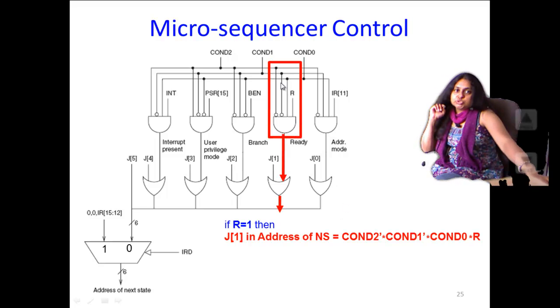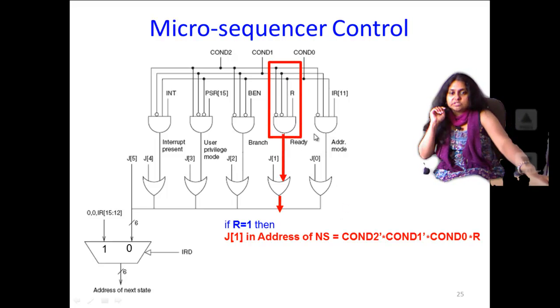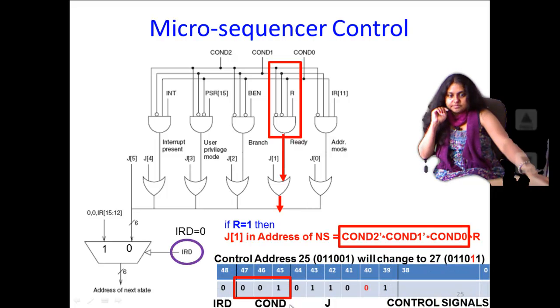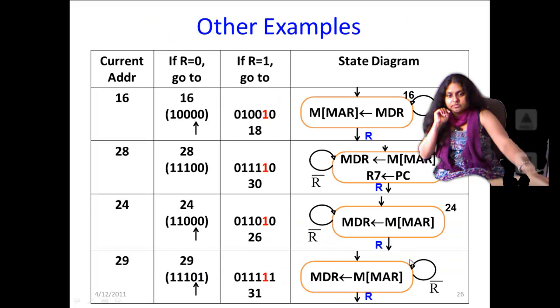So this shows you how this highlights exactly what we were talking about right now, about the J1 bit. And this also shows us how the 25 changed to a 27 in the example of the load instruction.